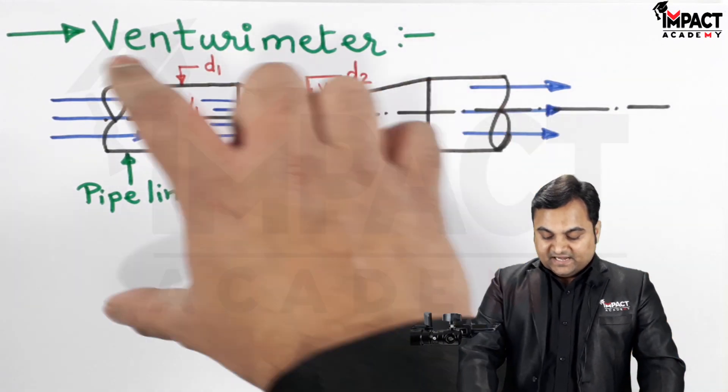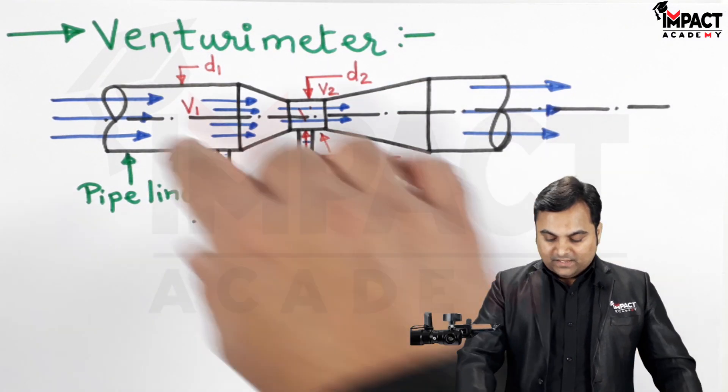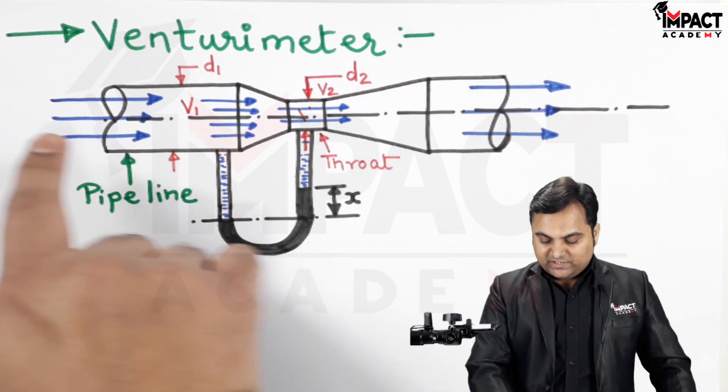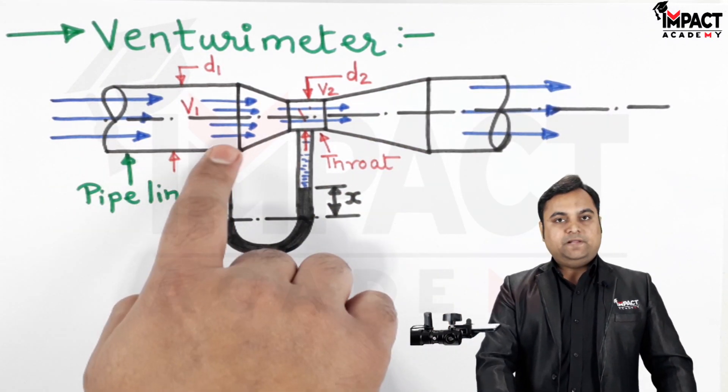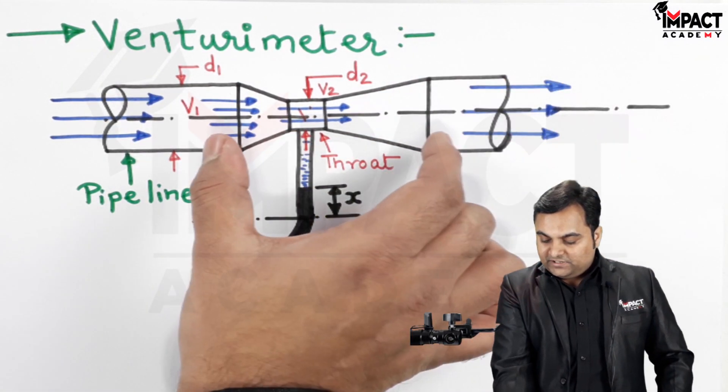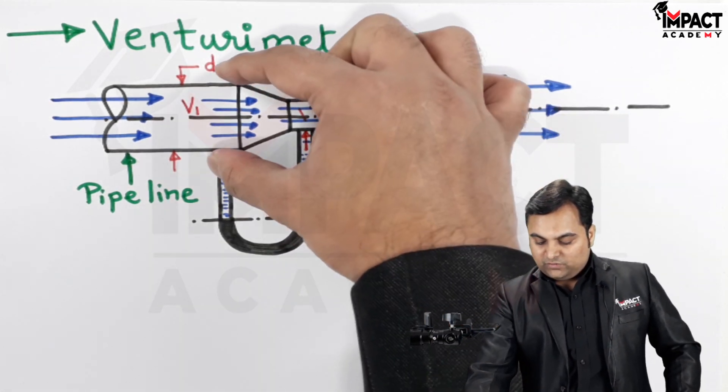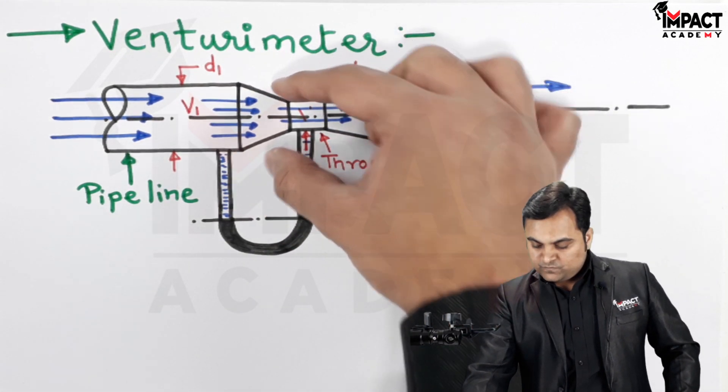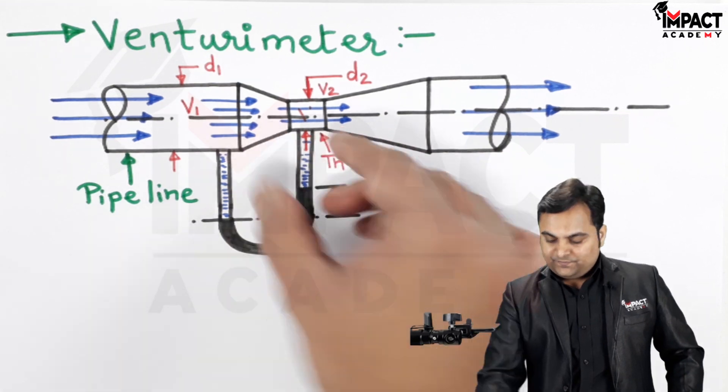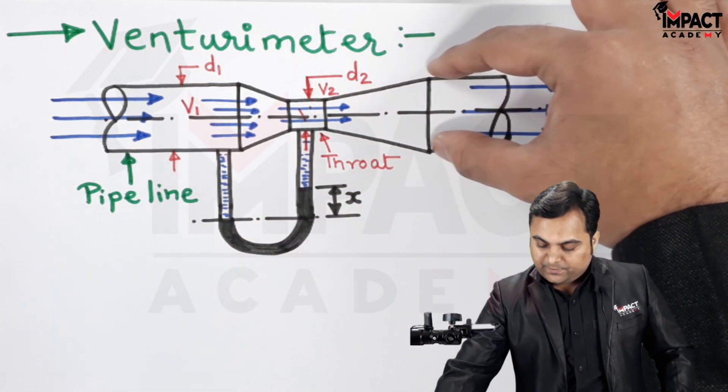Here is the diagram of a venturimeter. There is a flowing liquid as we can see here, it is entering this pipeline and venturimeter is this device which has a convergent part as we can see, then there is a throat section, after that there is a diverging part.